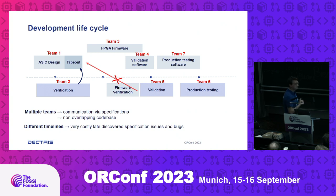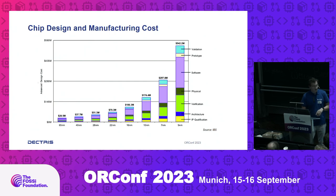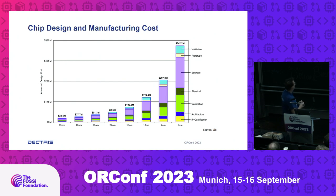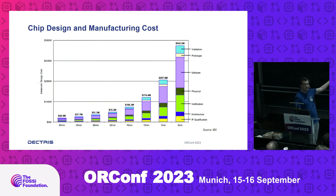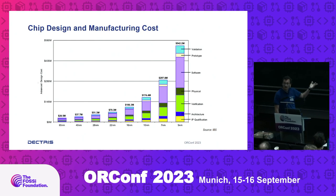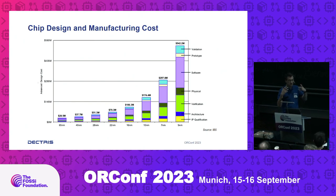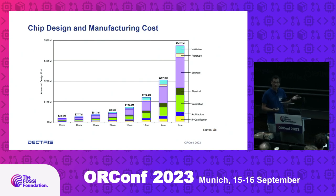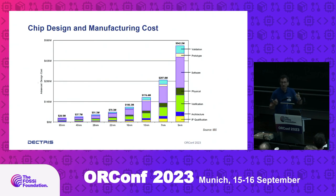This lack of communication means there is no feedback from the people doing software and validating the chip back into the ASIC. You end up with an ASIC that — even if it's not buggy — has a lot of patches around it because communication broke down. It's extremely costly to discover these issues very late when the silicon comes back. When you look at the cost breakdown of modern ASIC design, it's not the ASIC design itself that costs most of the money — it's verification and software that dominate. This tells you what to focus on.